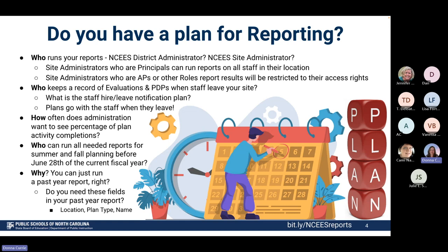Think about how often your administration wants to see a percentage of planned activity completions — monthly, or before principal meetings. There are reports that we can schedule so they'll have access when they meet. Also consider who can run all needed reports before the end of the school year. We are asking that everything be run by June 28th this year, which is a Friday, before the weekend.